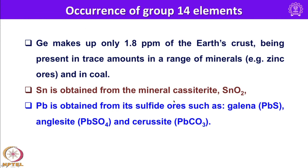Germanium makes up only about 1.8 ppm of the earth's crust, present in trace amounts in a range of minerals including zinc ores and coal. Tin is obtained from the mineral cassiterite, with composition SnO2, an oxide ore with several other impurities. Lead is obtained from its sulphide ores such as galena (PbS), anglesite (PbSO4), and cerussite (PbCO3).